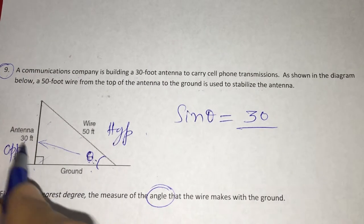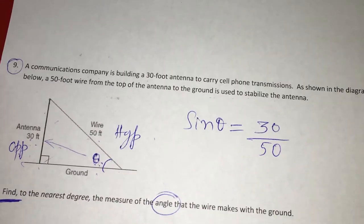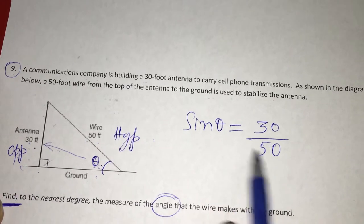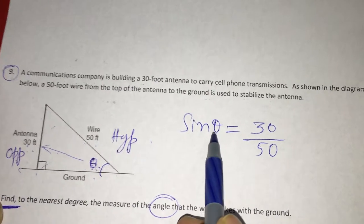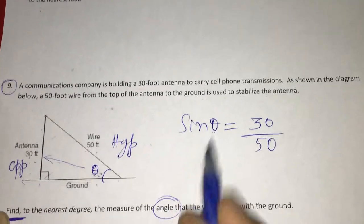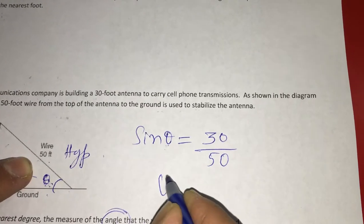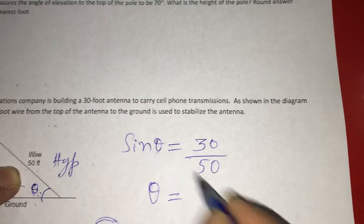But here we don't want this value, we want the theta angle. We have to find the angle. Whenever you have to find the angle, you have to write theta is equal to sine inverse of this 30 over 50.